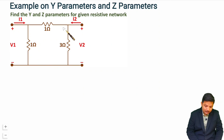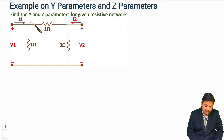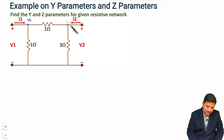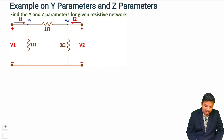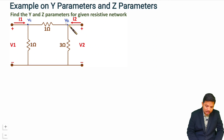As this is a simple pi network, by finding two KCL equations we can easily solve for Y and Z parameters. The basic standard process — where for Y parameters we short one port, find two parameters, then short another port and find the other two — we will not follow that here for a simple T or pi network. Here, nodes V1 and V2 are given to us.